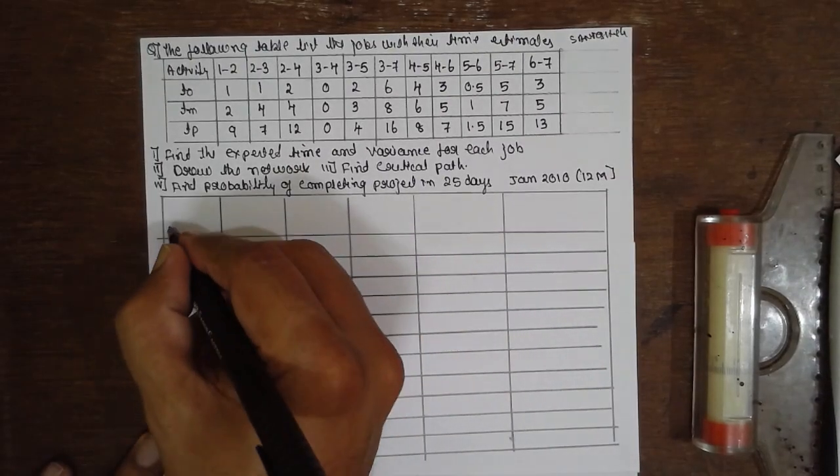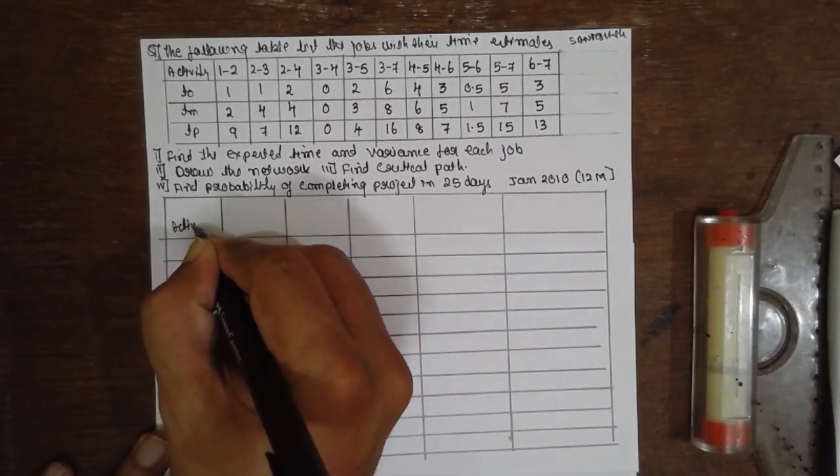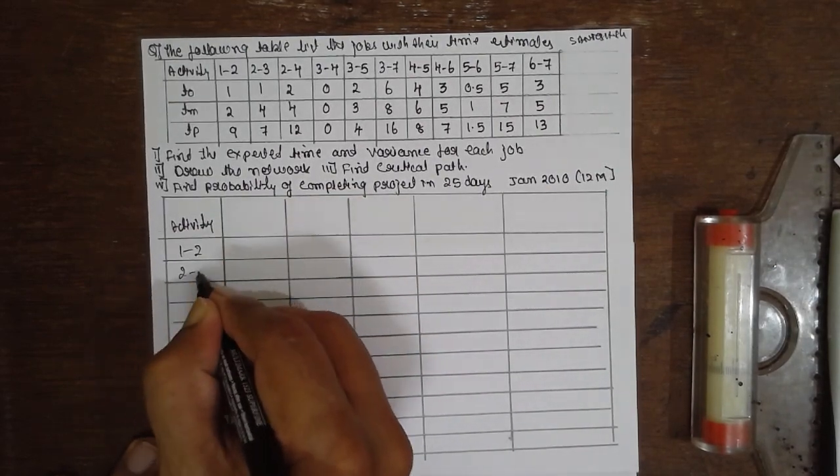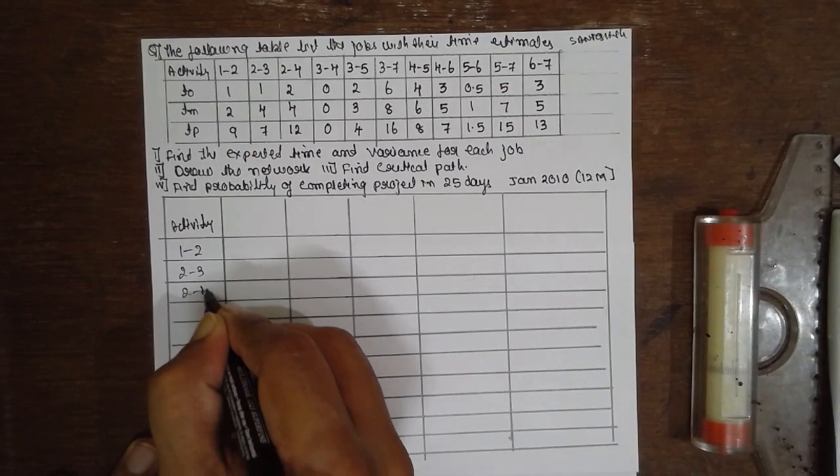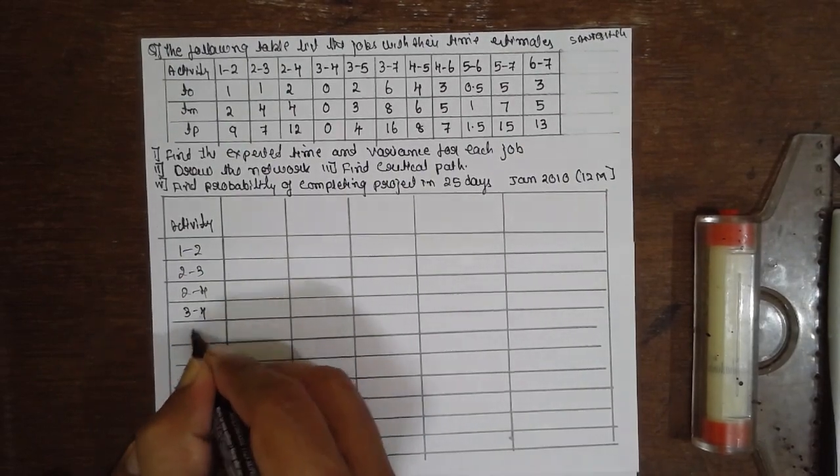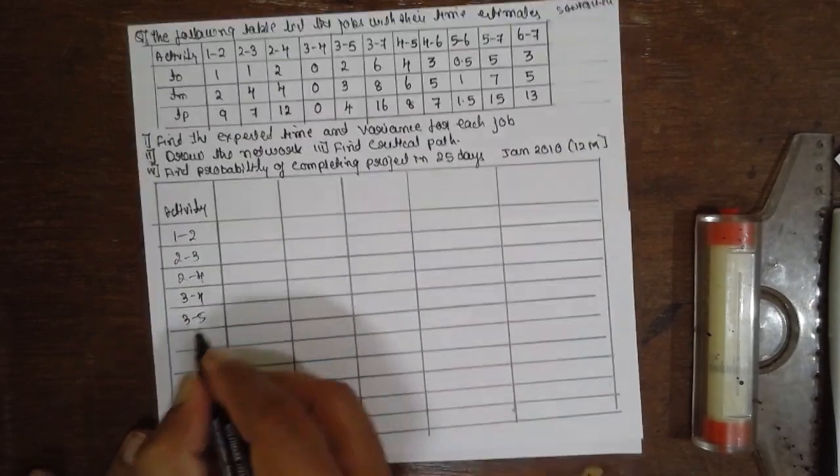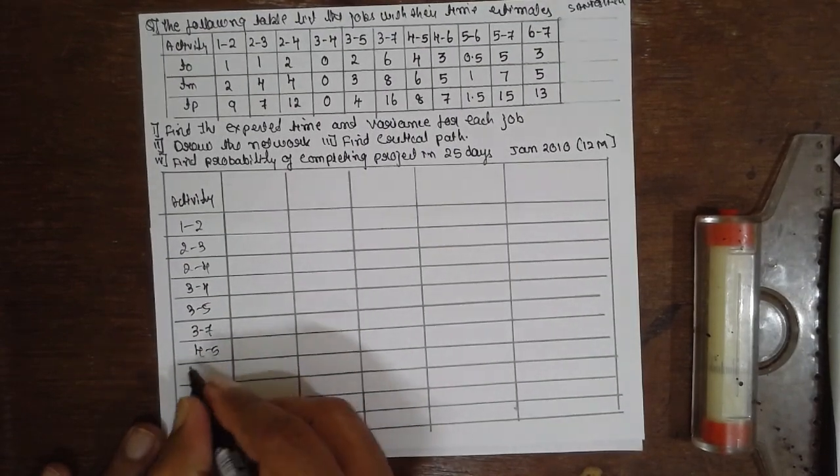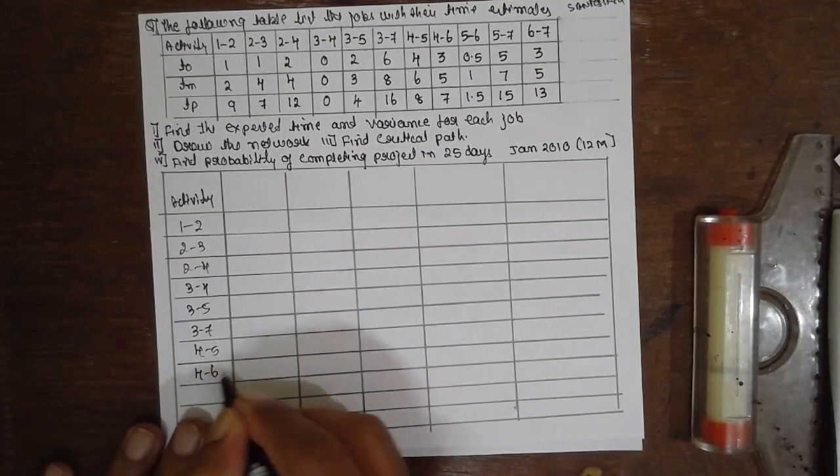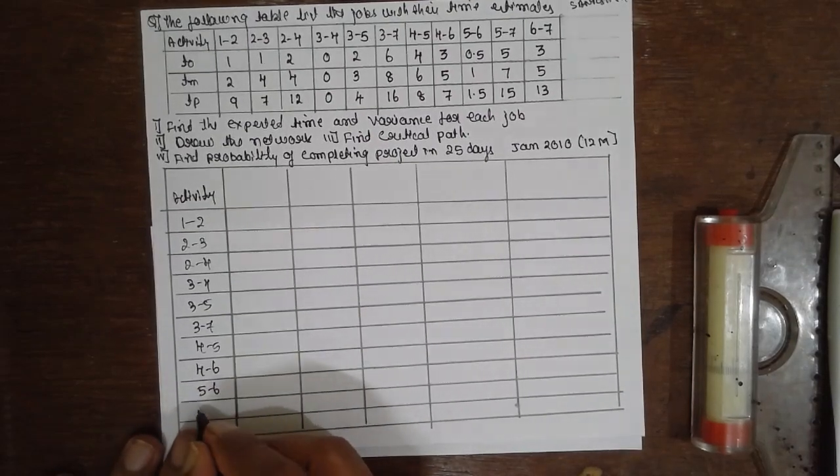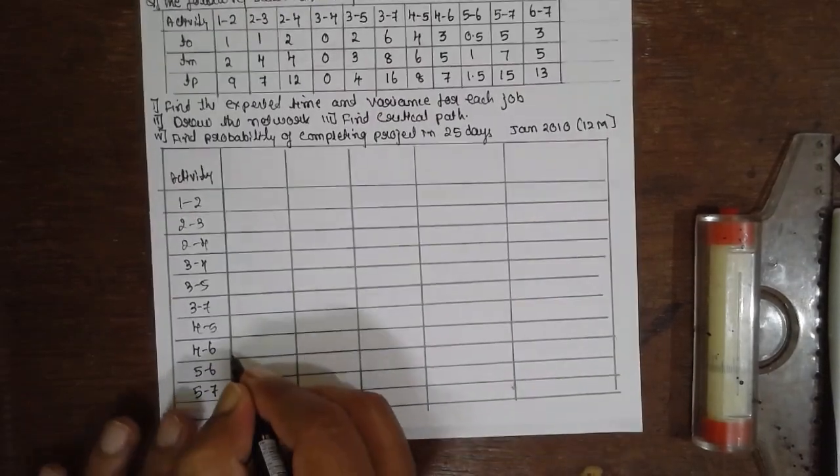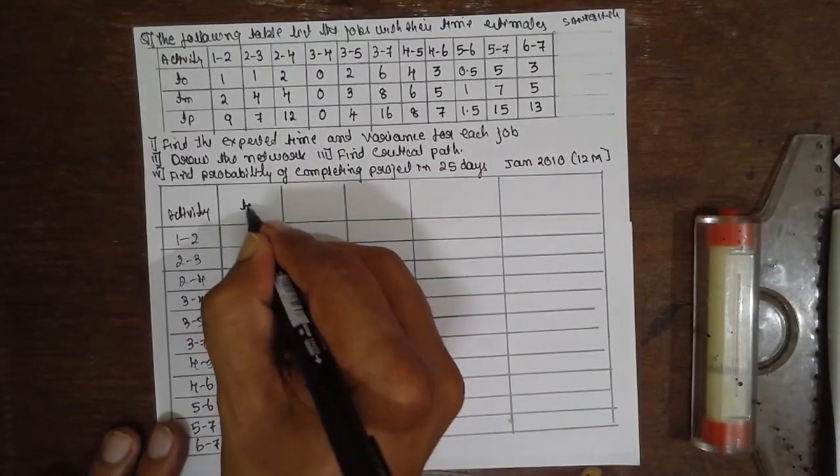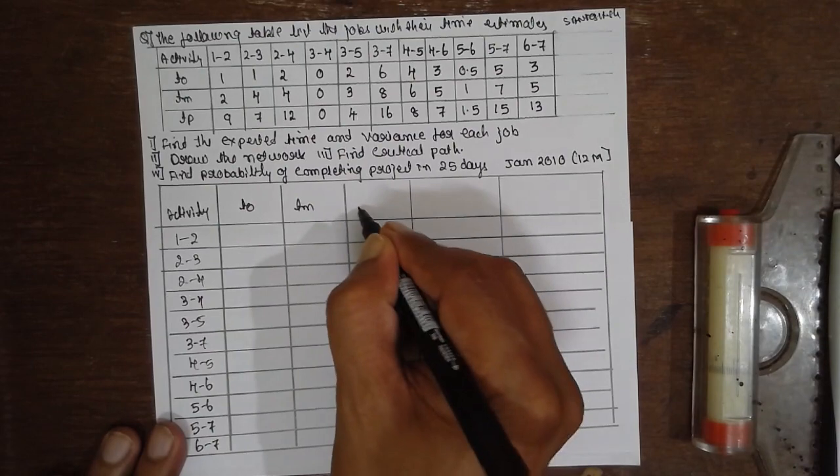I will write the activities here: 1-2, 2-3, 2-4, 3-4, 3-5, 3-7, 4-5, 4-6, 5-6, 5-7, 6-7. Now T0 value, TM value, TP value.